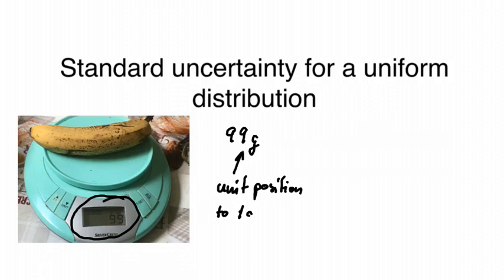Now of course we don't know exactly what the weight of the banana is because the kitchen scales obviously do some rounding. So the banana could be anywhere between 98.5 grams, which would give us 99 grams on the display, or it could be just shy of 99.5 grams, which also would give us a display of 99 grams.